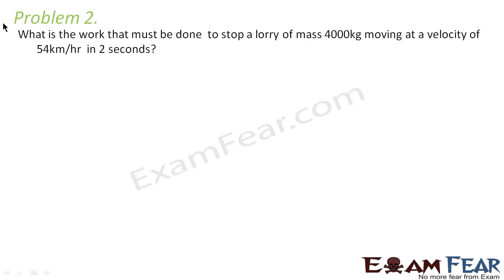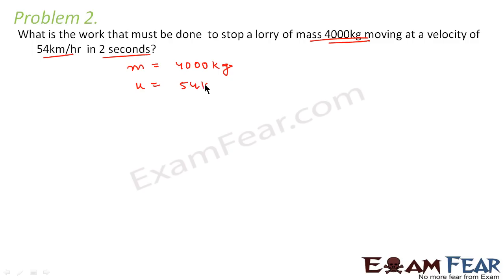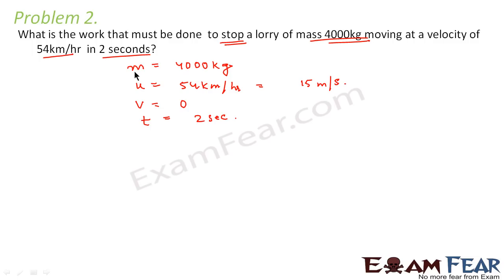Problem 2: What is the work that must be done to stop a lorry of mass 4000 kg moving at a velocity of 54 km/h in 2 seconds? Mass = 4000 kg, initial velocity = 54 km/h = 15 m/s, final velocity = 0. Since time t = 2 s is given, we will use the first kinematic equation.